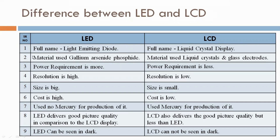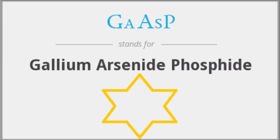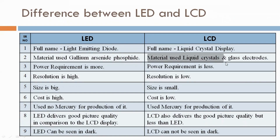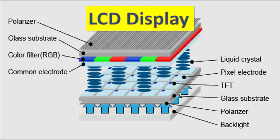Material used: for LED, the material used is gallium arsenide phosphide. For LCD, the material used is liquid crystal and glass electrodes.